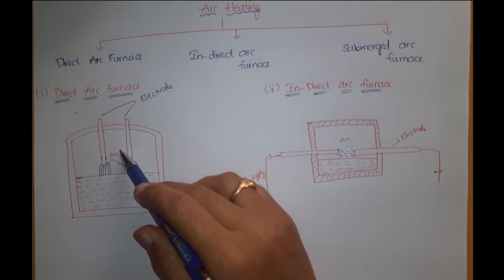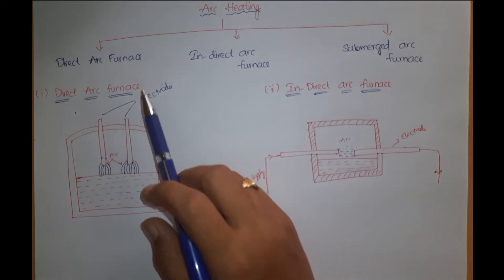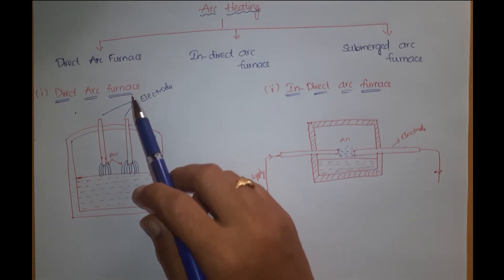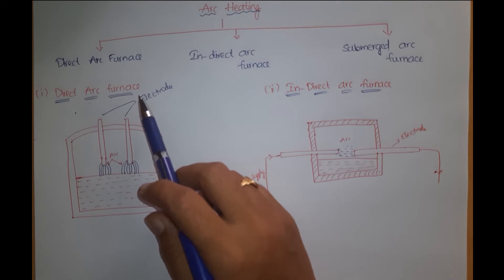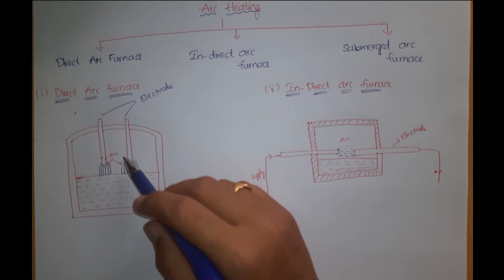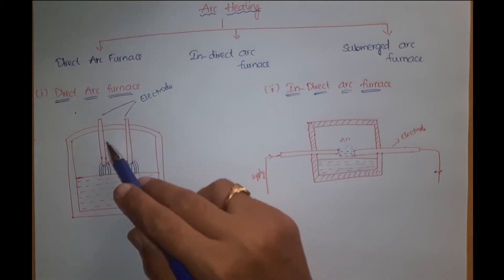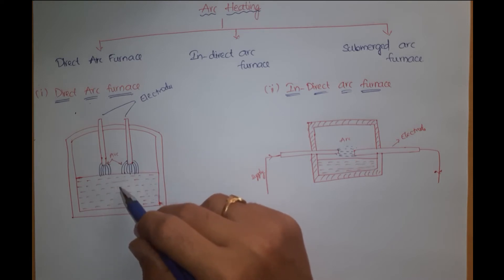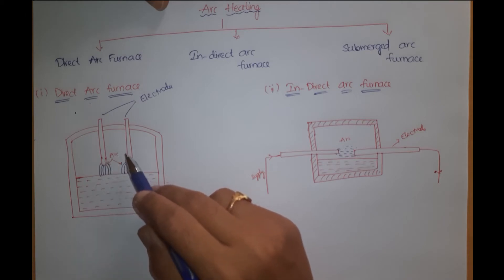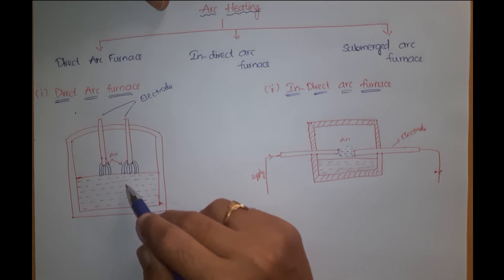Now coming to the methods of arc heating, the classification is: direct arc furnace, indirect arc furnace, and submerged arc furnace. Now let us see these three methods in detail. Coming to the direct arc furnace, you can see the constructional part here. There is a heating chamber with two electrodes and a charge in it. Charge is nothing but the material to be heated. These electrodes are placed such that there is a certain gap between the two electrodes and the charge.